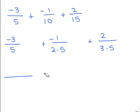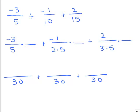The factored form of 30 is 2 times 3 times 5. For the first fraction over 5, I'm missing a 2 times 3, which is 6, so I multiply by 6 over 6. For the second fraction over 10, I'm missing a 3, so I multiply numerator and denominator by 3. For the last fraction over 15, I multiply by 2 over 2. So they all have a common denominator of 30.